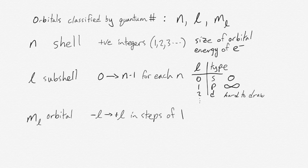The ml quantum number talks about specific orbitals within a subshell within a shell. It effectively corresponds to an orientation of each of the orbitals within a subshell. This means that different subshell types will have different numbers of orbitals within them. We'll do an example where we calculate a couple of different orbital combinations based on different quantum numbers.